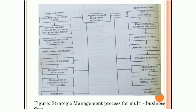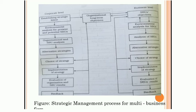The next figure shows the strategic management process for a multi-business firm — such as the Tata Group, which has multiple business units. On the left-hand side is the strategic management process at the corporate level. The same steps apply: establishing strategic intent, environmental analysis for present as well as potential SBUs, organizational analysis, identifying alternative strategies, choice of strategy, implementation, evaluation and control, and feedback.